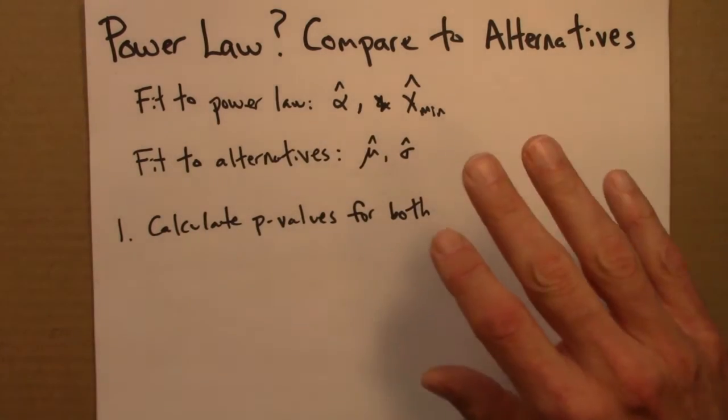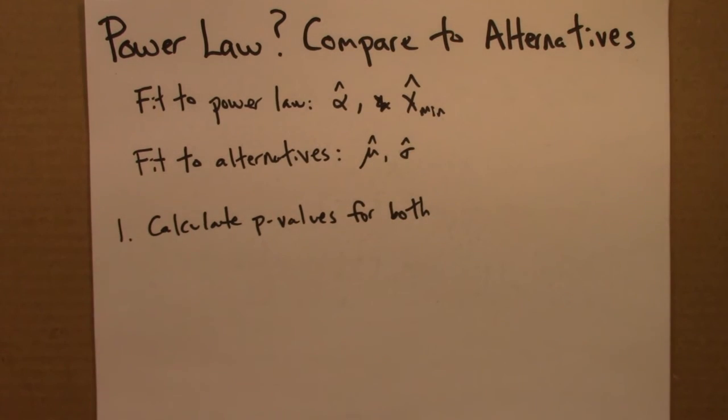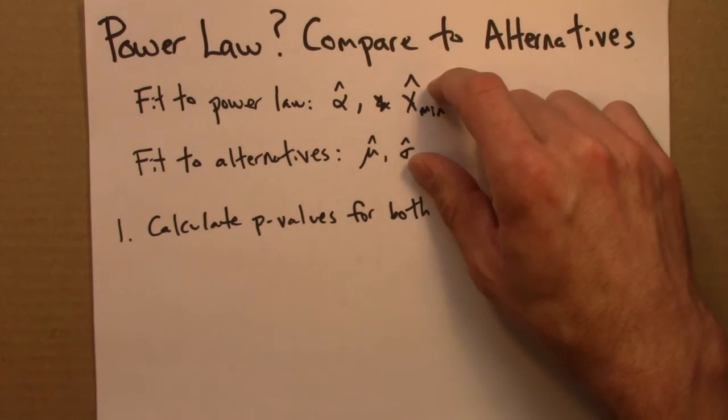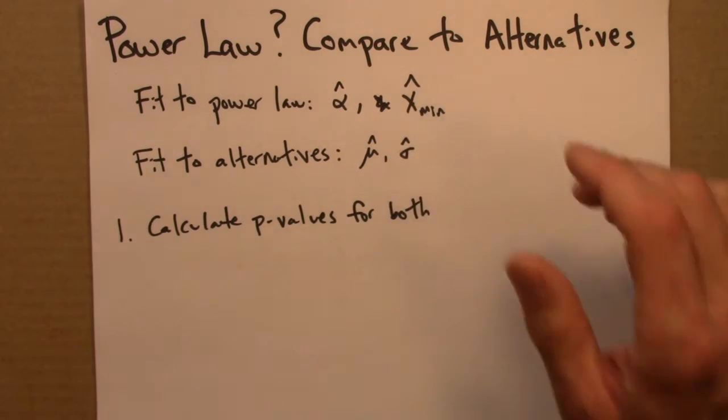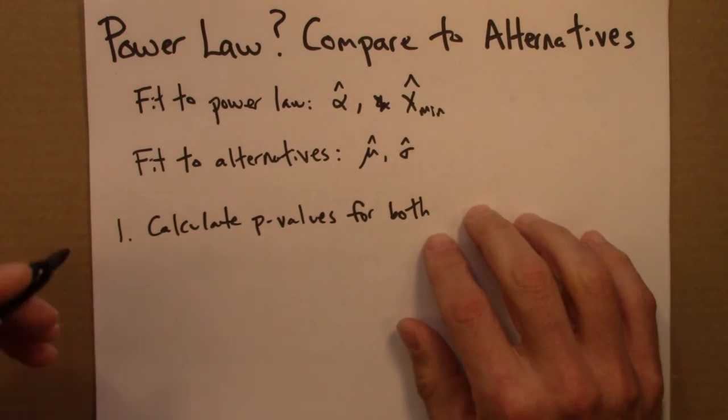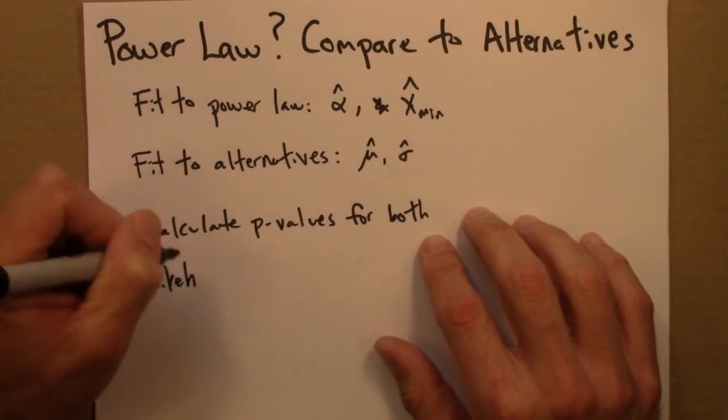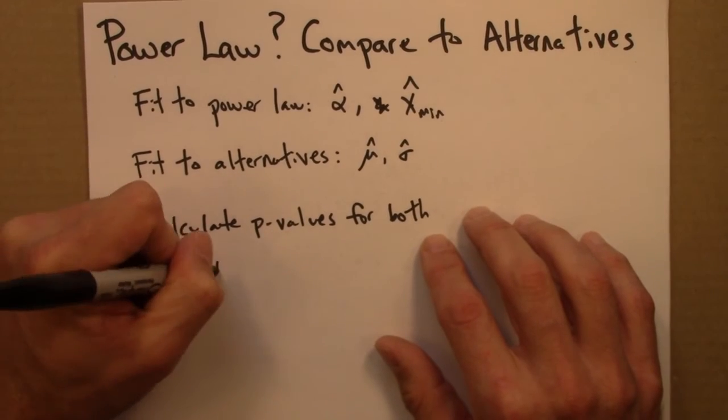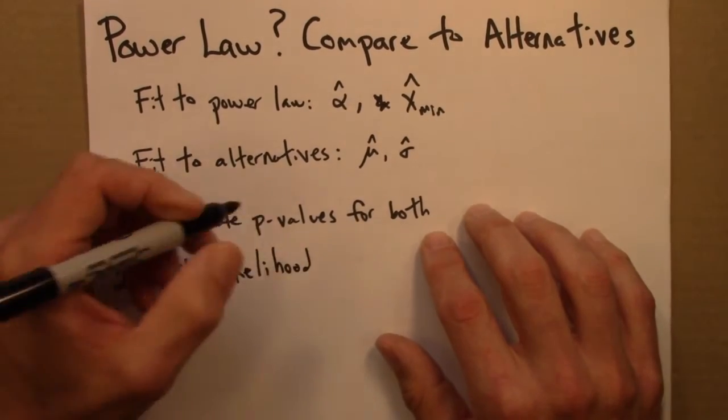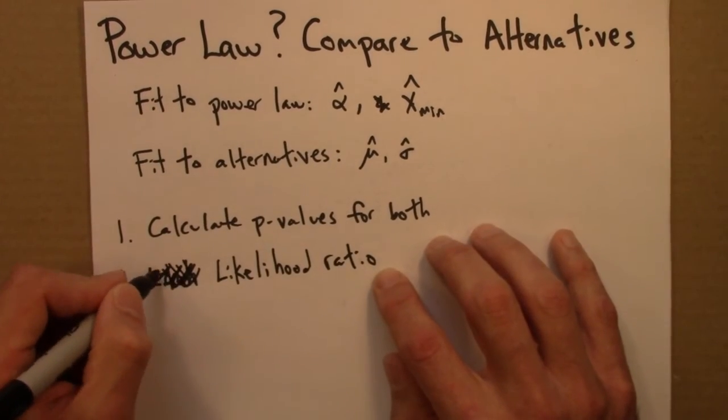So that's one approach. Calculate p-values, and maybe you can use those to eliminate some of the alternatives. But what if you have multiple alternatives which both look reasonably plausible according to their p-values? What would you do then? So then there's an approach known as likelihood ratios.